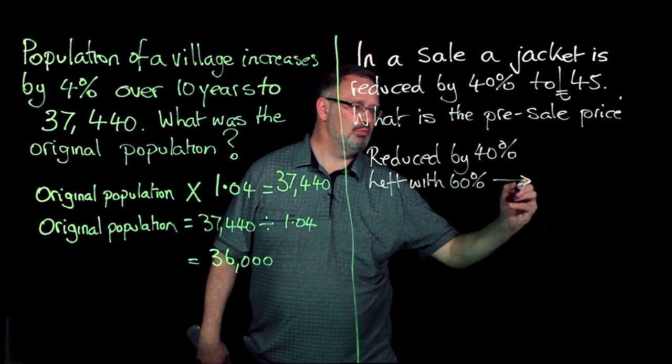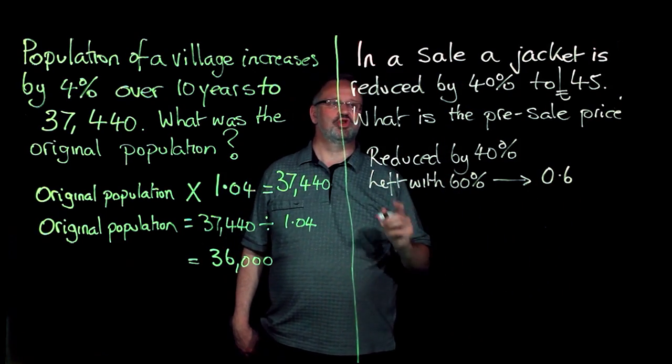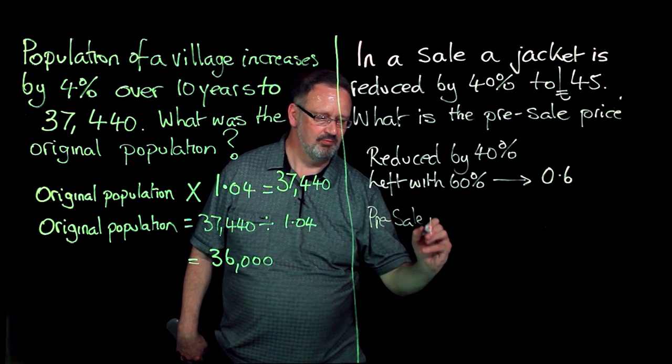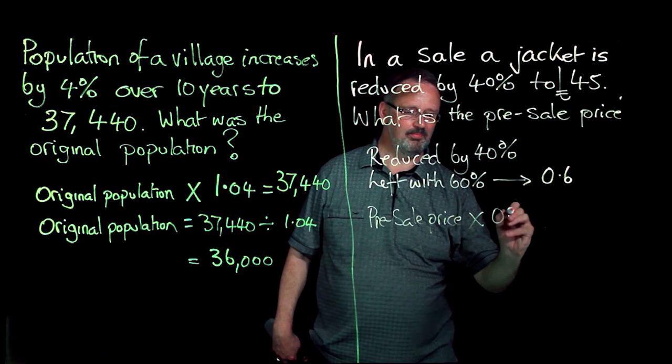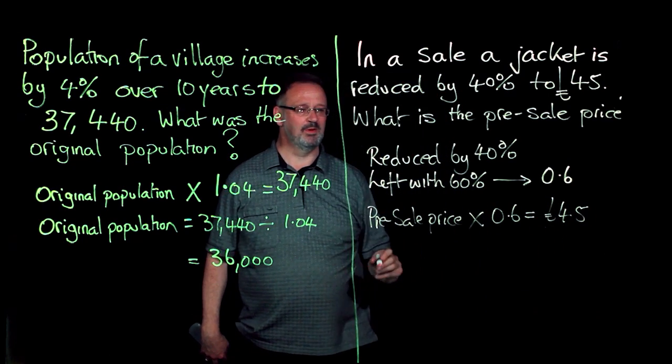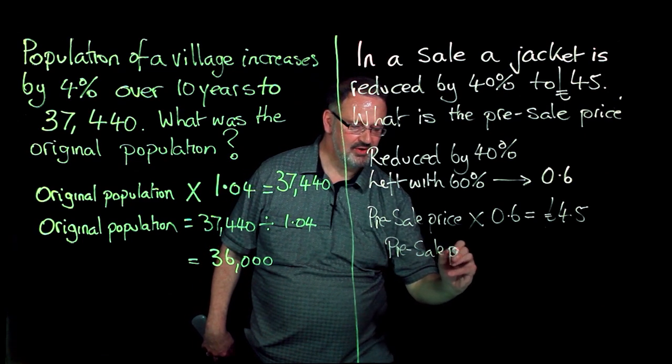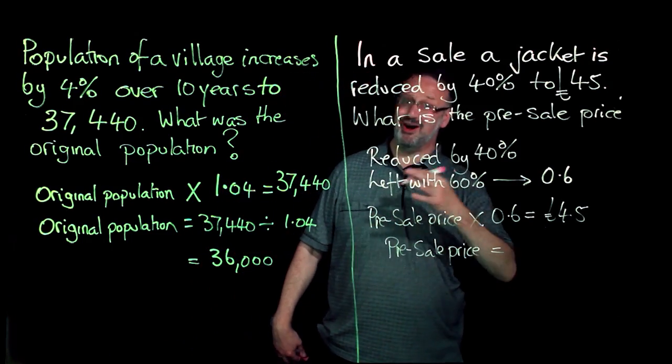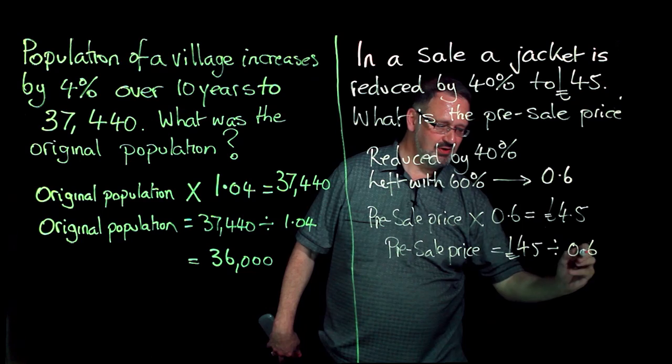Which gives me a multiplier of 0.6. So pre-sale price times the multiplier equals the sale price of £45. So my pre-sale price, opposite function of multiplying by 0.6 is to divide by 0.6. £45 divided by 0.6.